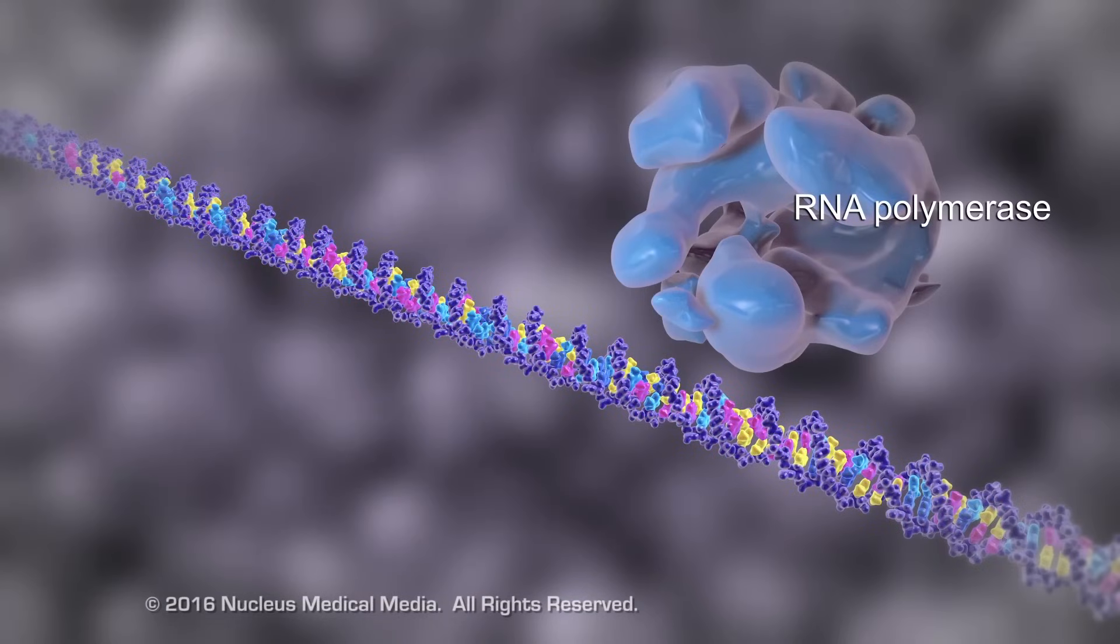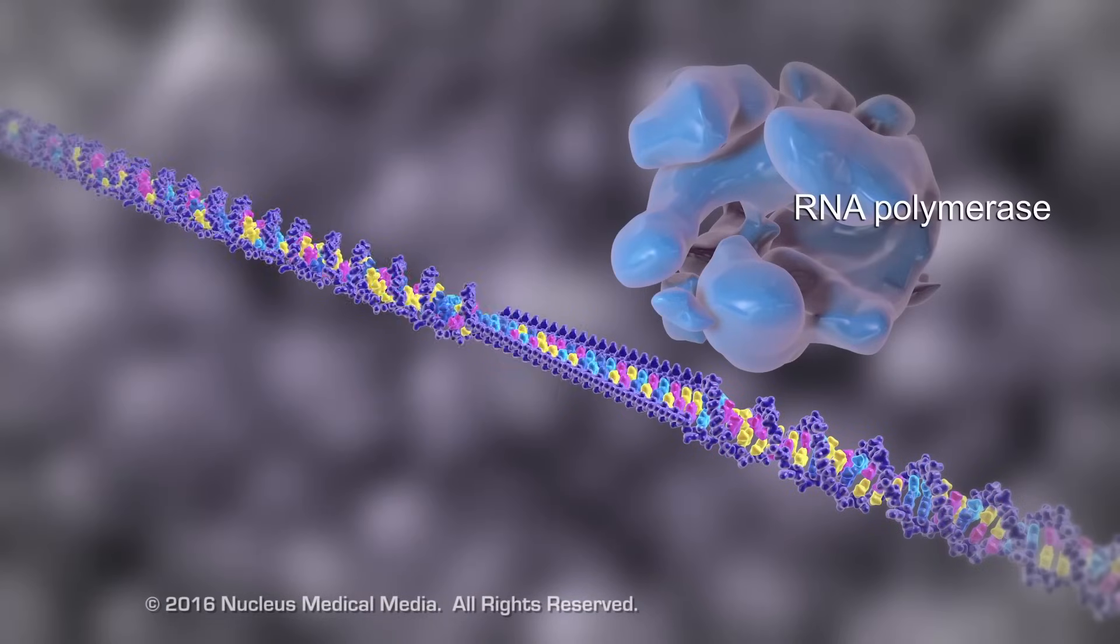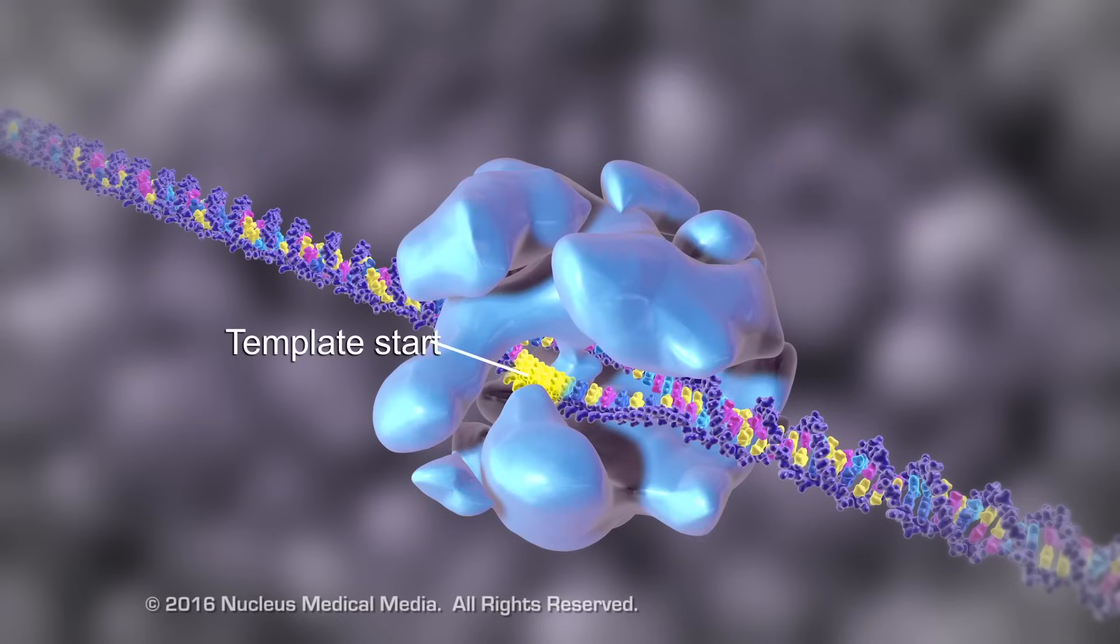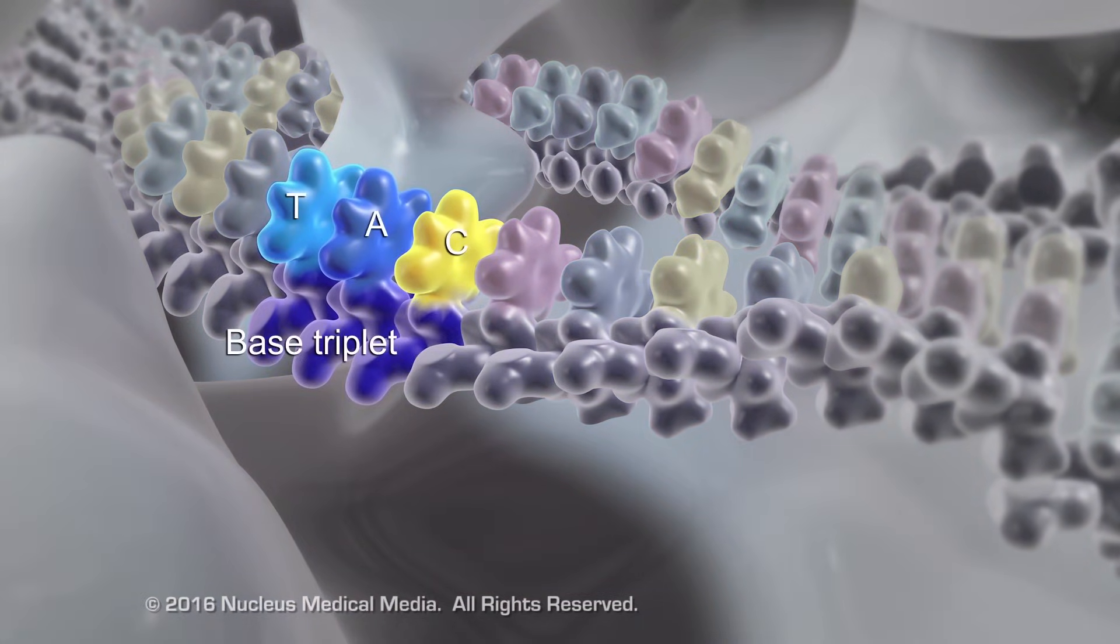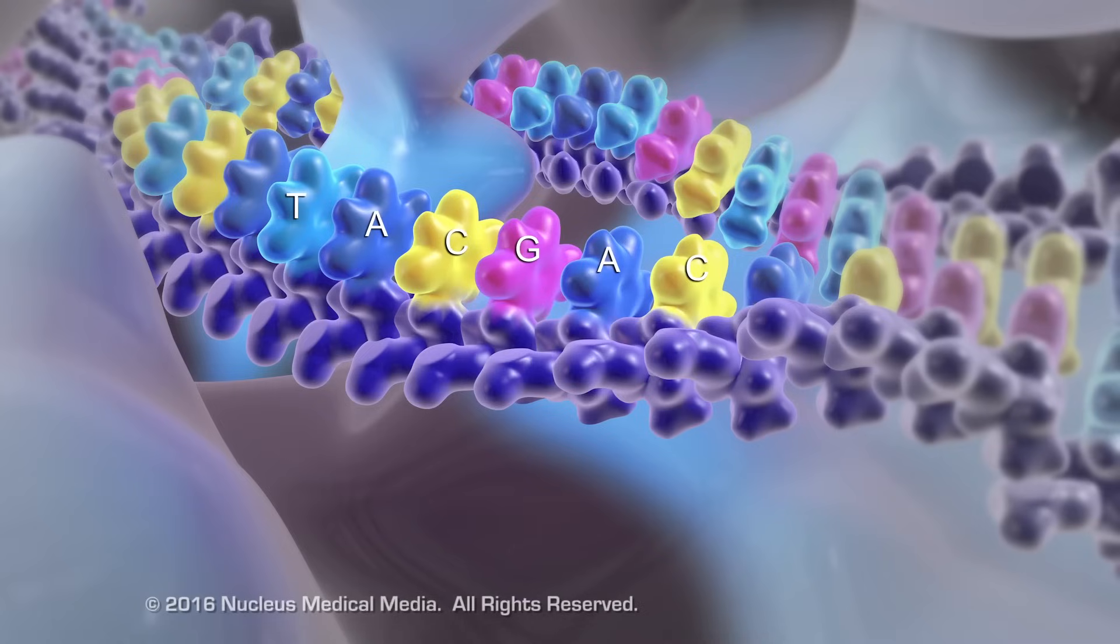To start transcription, an enzyme called RNA polymerase attaches to the beginning of the DNA template. A sequence of three DNA bases, called a base triplet, contains information for assembling each amino acid of a protein.